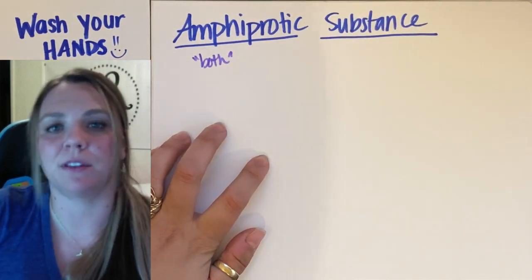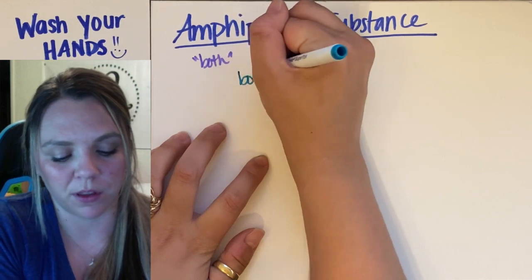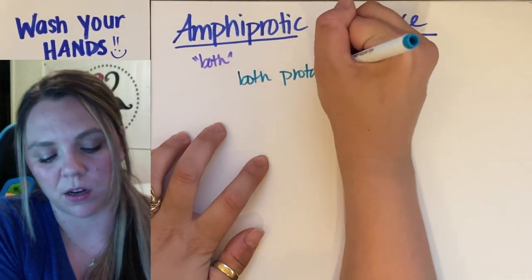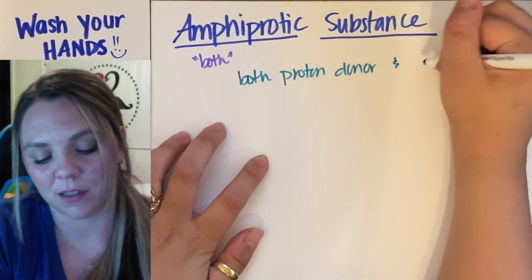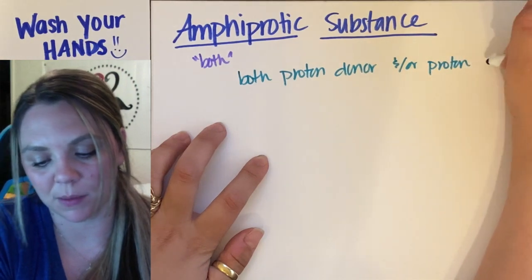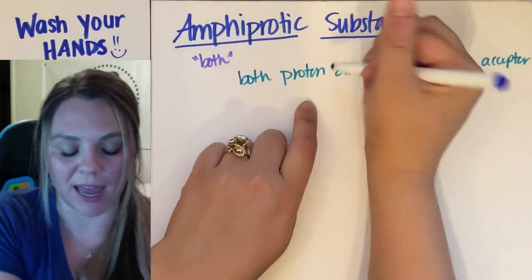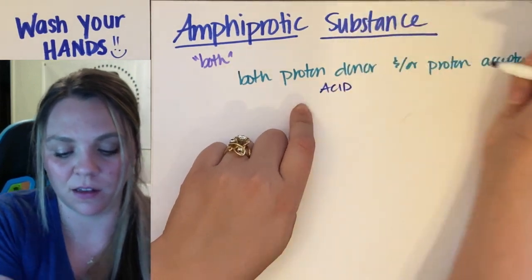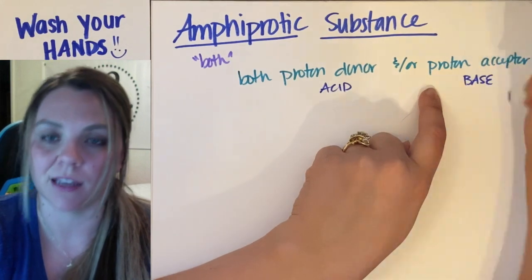And an amphiprotic substance would be one that can be both a proton donor and or a proton acceptor. Meaning it can act as a proton donor, it can act as an acid, or a proton acceptor, it could act as a base.